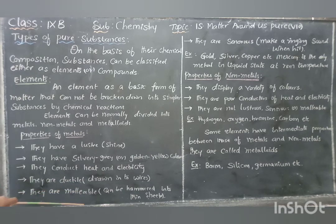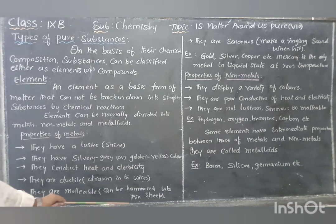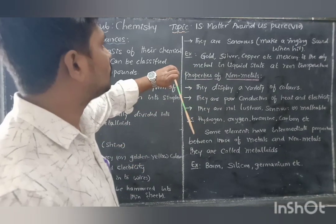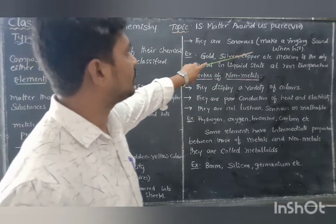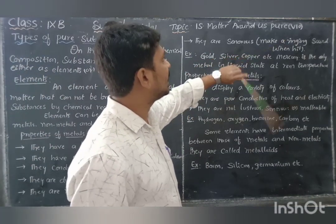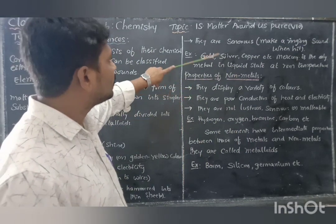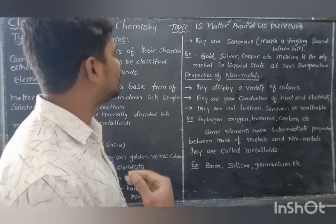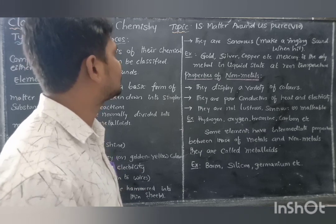Metals are malleable — meaning you can make them into a sheet. With the help of a hammer, the entire metal can be made into a thin sheet. Metals are also sonorous — they produce a sound when struck.